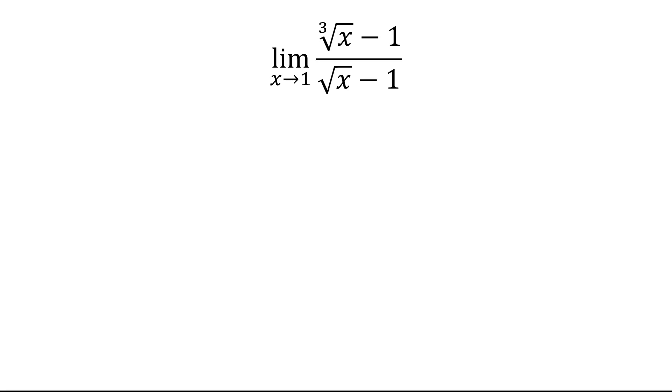Now let's look at it a different way. This way, we'll multiply the top and bottom by the square root of x plus 1 times the cube root of x squared plus cube root of x plus 1.